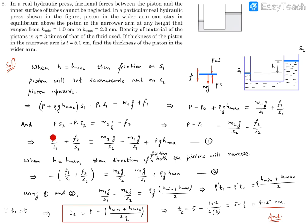Note that F1 and F2 here are limiting frictions. If we do not take H at its extreme values, the frictions are static and self-adjusting, taking different values depending on H. However, when H is at an extremum, the friction reaches its limiting value in both cases. Limiting friction remains the same value (μs × normal reaction), which is why we used the same F1 and F2 in both equations and combined them to get the final expression.